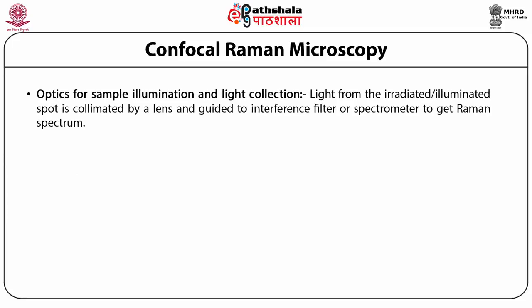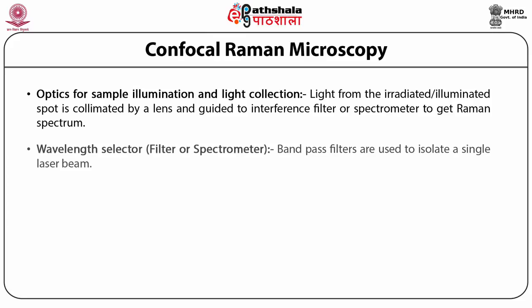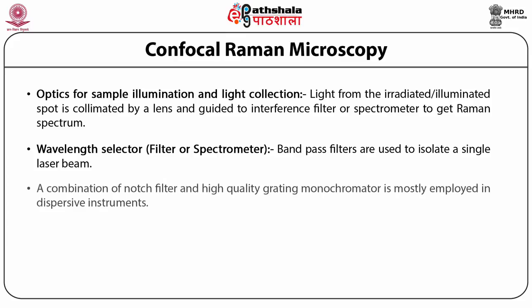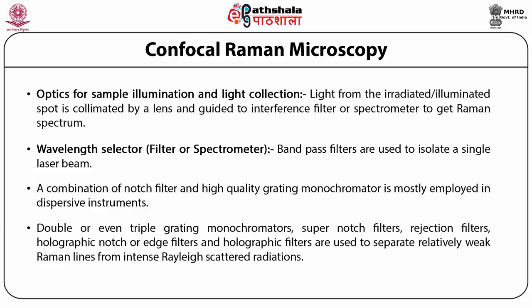The second component is optics for sample illumination and light collection. Light from the irradiated spot is collimated by a lens and guided to an interference filter or spectrometer to obtain a spectrum. Third is the wavelength selector — filter or spectrometer. Bandpass filters are used to isolate a single laser beam. A combination of notch filter and high-quality grating monochromator is mostly employed in dispersive instruments. Double or triple grating monochromators, super notch filters, rejection filters, holographic notch or edge filters, and holographic filters are used to separate relatively weak Raman lines from intense Rayleigh scattered radiation.